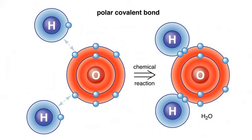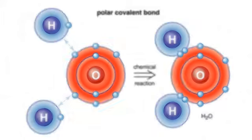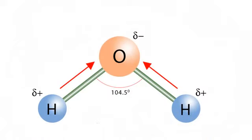Not all covalent bonds are equal though. In some cases, one atom pulls the shared electrons closer to itself. This creates a polar covalent bond, where one side of the molecule has a slight positive charge and the other has a slight negative charge. Water is a great example of this.